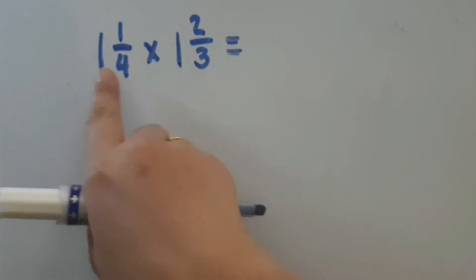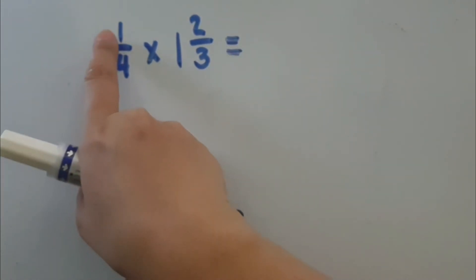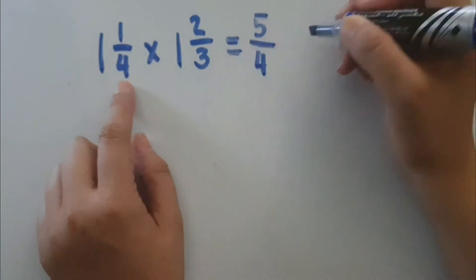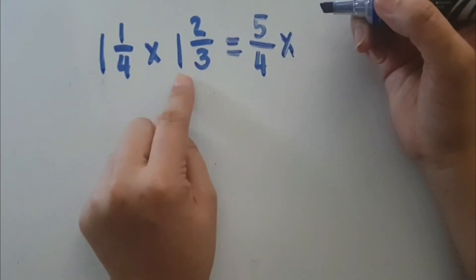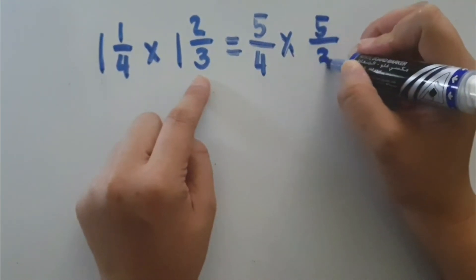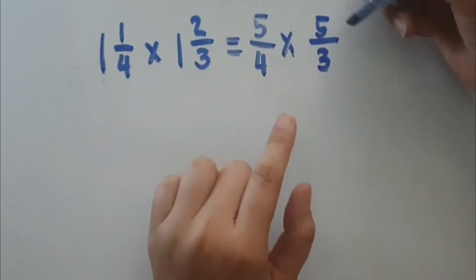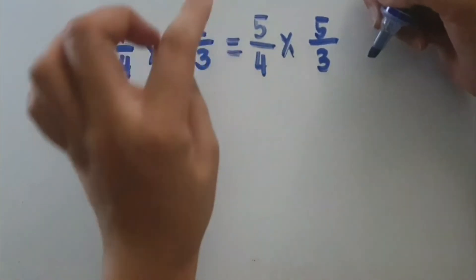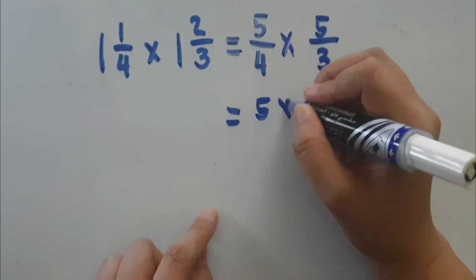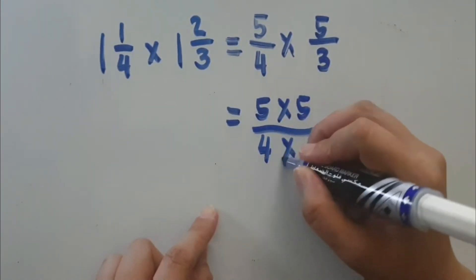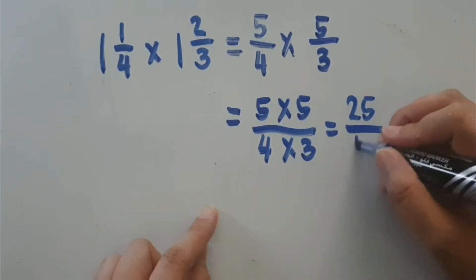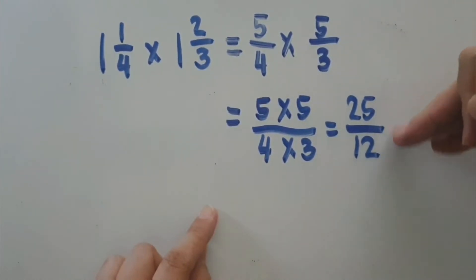We have 4 times 1, that is 4, plus 1 is 5. Copy the same denominator, which is 4. Then, 3 times 1 is 3, plus 2 is 5, over the same denominator, which is 3. Now we have fractions. We can multiply them by multiplying their numerators over the product of their denominators. So that will be 5 times 5, over 4 times 3. 5 times 5 is 25, and 4 times 3 is 12. So the answer will be 25 over 12.